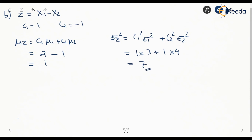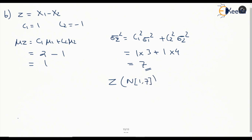So both Y and Z are normal random variables. Z is a normal random variable with parameters mu = 1 and sigma squared = 7, written as N(1, 7).